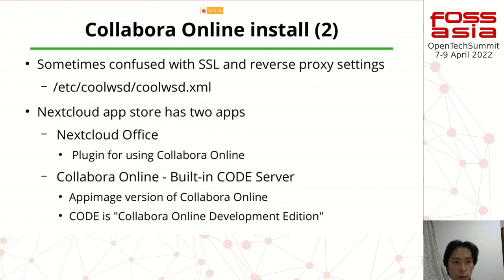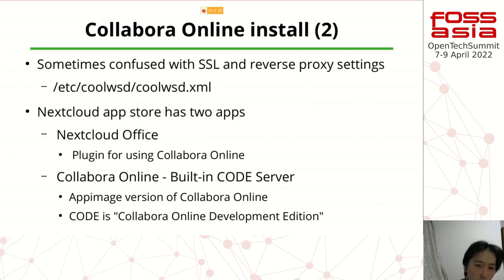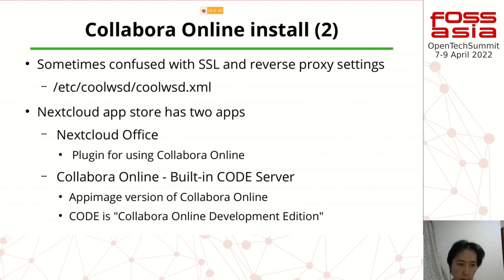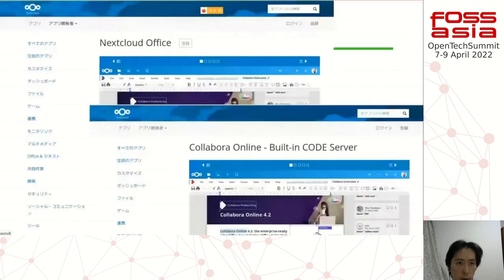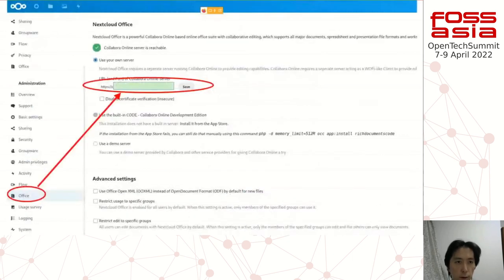Sometimes it's confusing that the Nextcloud App Store has two apps. The Nextcloud Office app is a plugin for Collabora. You need to install this plugin and the Collabora built CODE server — which is also an upstream image version. CODE is the Collabora Online development edition.